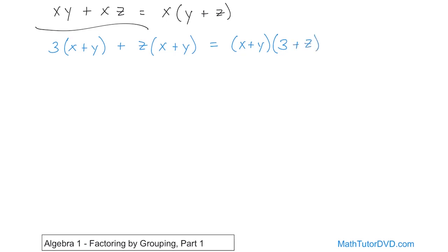When we pull it out from the second part, all we have left is z. So you get three plus z inside the second parentheses. The reason there's a plus sign is the same reason as before — there was a plus sign there. This is the factored form; this is what we call factoring by grouping. You can verify by distributing: this whole term times three gives you the first part, and times z gives you the second, and going backwards with distribution confirms it's correct.